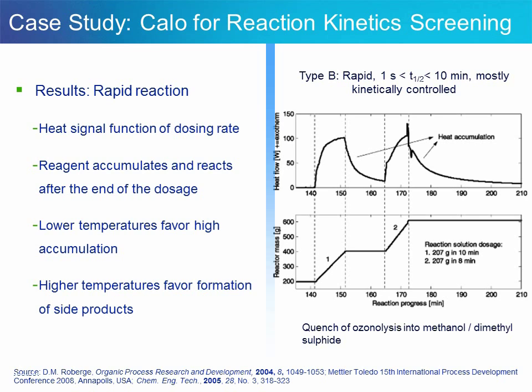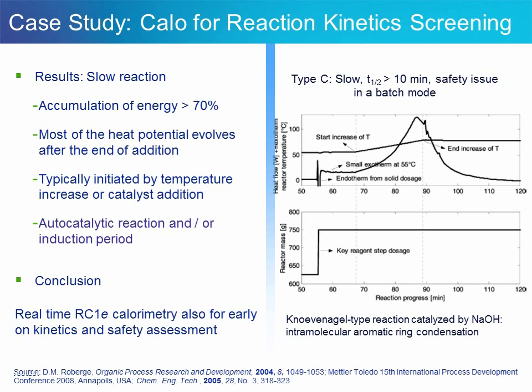For slow reactions, after addition is complete, you may get something that looks like a Fujiyama-type heat profile, with a slow initiation, a delayed reaction rate peak, and typically a long tail that may linger for a day or two. These are the tricky ones to scale up in batch mode. If significantly exothermic, these reactions present a process safety issue, made worse if the reaction is autocatalytic — meaning the product facilitates the reaction, so as the reaction progresses, the rate gets faster and faster, as easily visualized using reaction calorimetry. This concludes the case study on using RC1 calorimetry as an early tool for kinetics and safety assessment, particularly for the development of continuous processes.